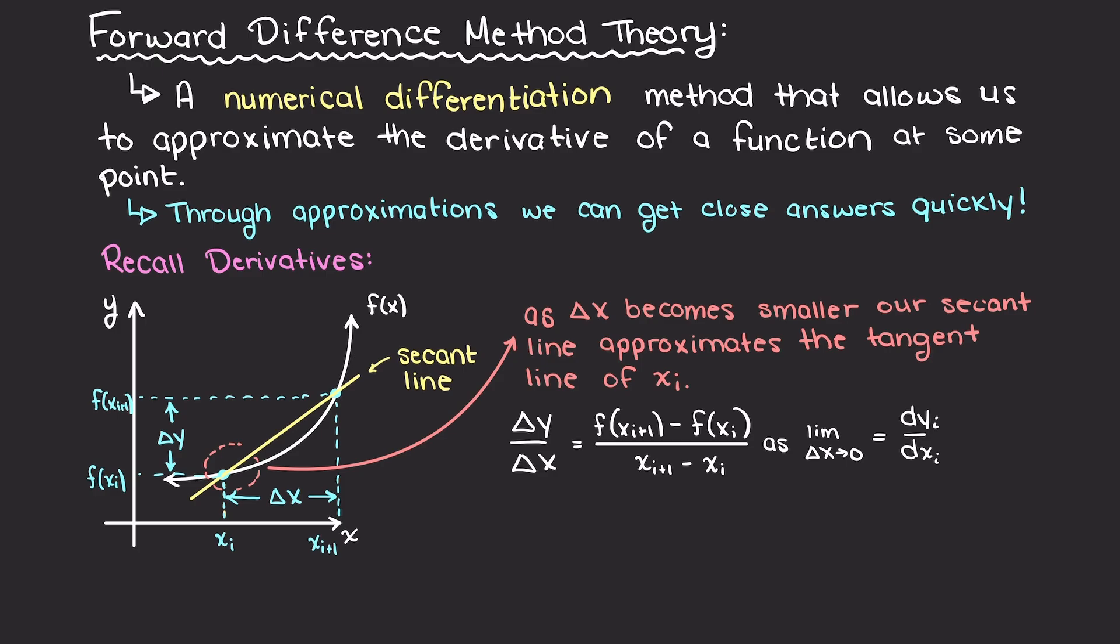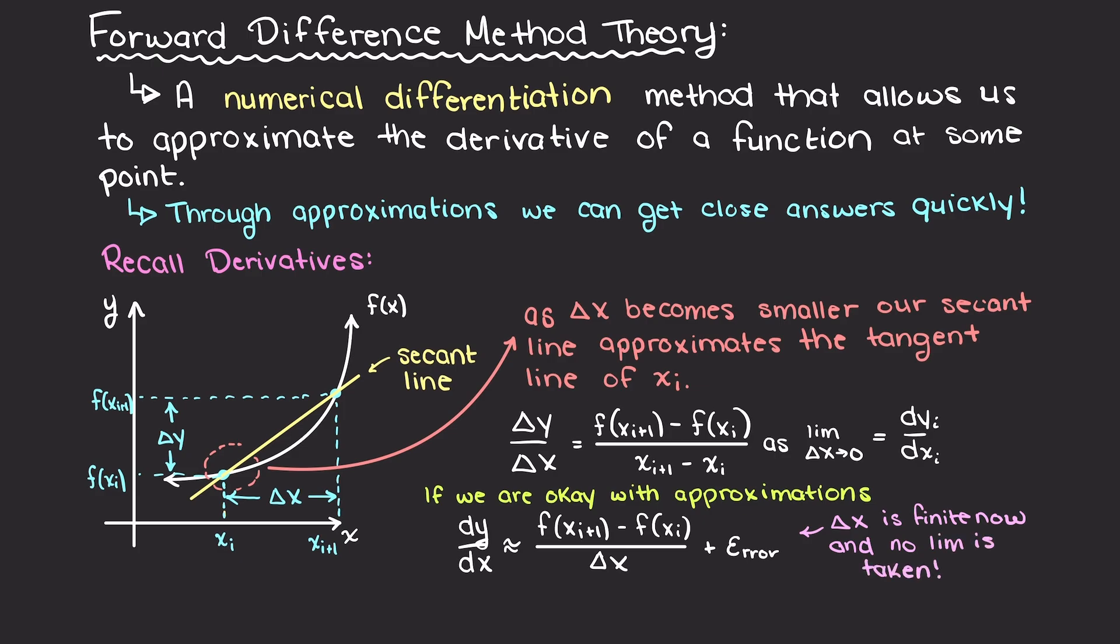How does that help us understand numerical differentiation? Well, if we are okay with good approximations of what this derivative is, and not exactly as we would say in an analytical sense, we can say that the derivative at point x is roughly the change in our function across a very small, finite change in x. Thereby assuming a finite small change in x, we can make our lives much easier and solve much more complicated problems by giving up just a tiny bit of accuracy.